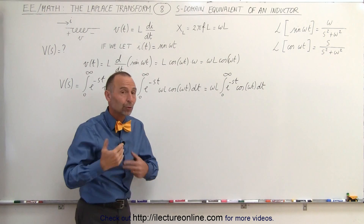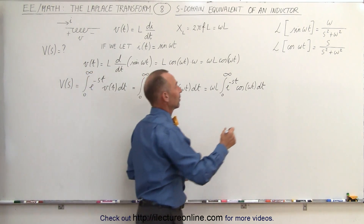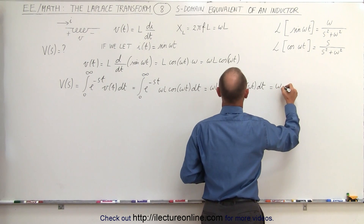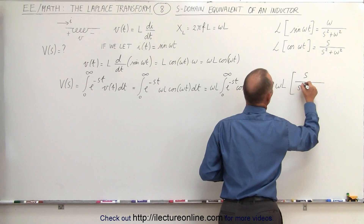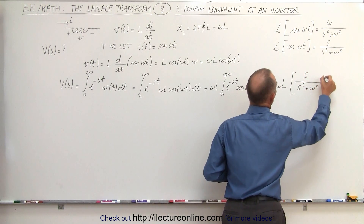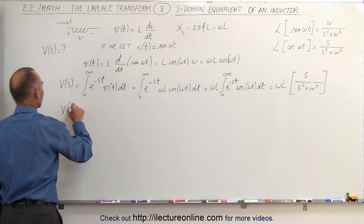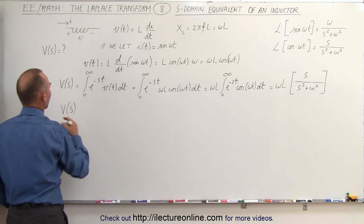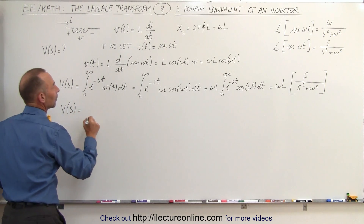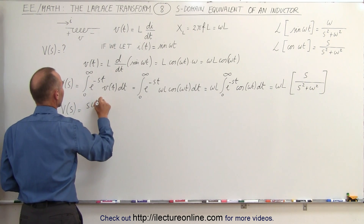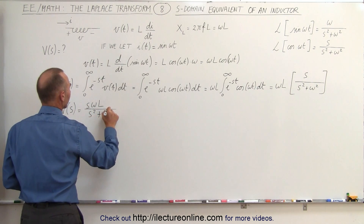Instead of going through all that work, we simply replace that integral with that quantity, so we can say this is equal to ω times L times S divided by S² plus ω². Therefore, the voltage across the inductor in the frequency domain can be written as SωL divided by S² plus ω².